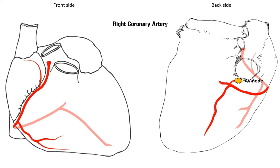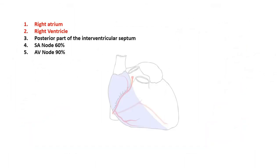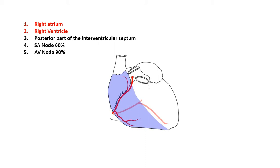So that was the right coronary artery and its branches in a nutshell. The right coronary artery supplies the right atrium, right ventricle, posterior part of the interventricular septum, the SA node for 60% of cases, and the AV node for 90% of cases. Now we will talk about the left coronary artery.